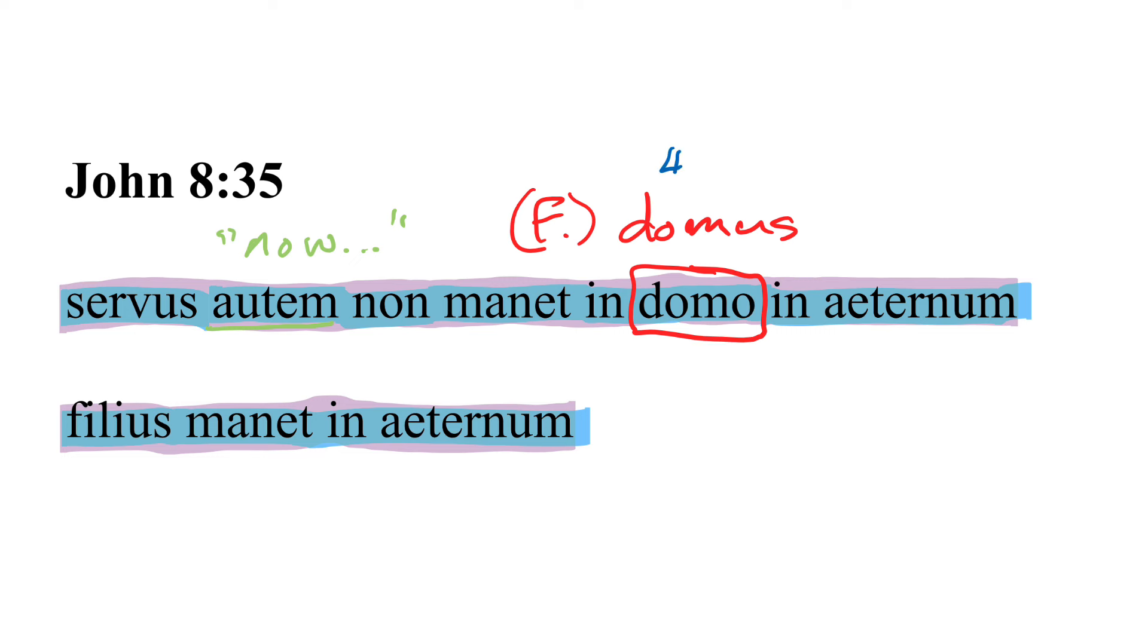And I'm chuckling because this word is sort of notorious among Latin students who get confused by it sometimes. Domus is mostly a fourth declension noun. And you might say, what do you mean mostly? And that's where the rub is.